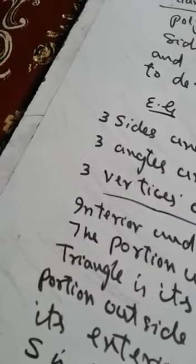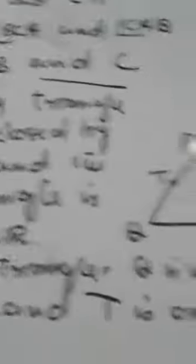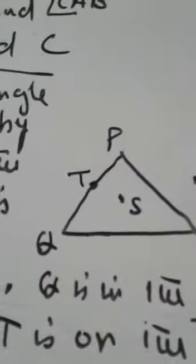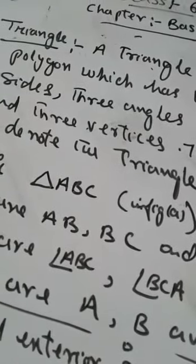We distinguish between interior and exterior regions of a triangle. A triangle also has sides and angles as its key components.